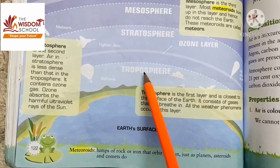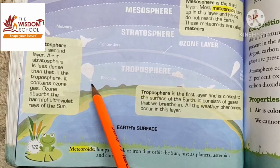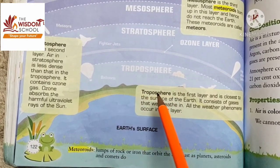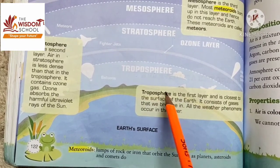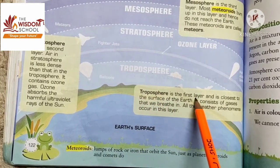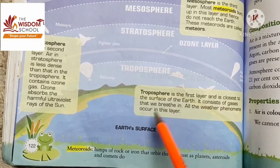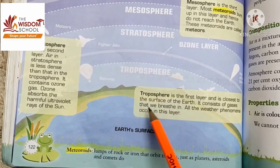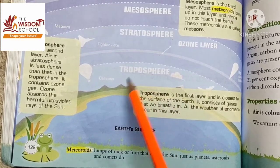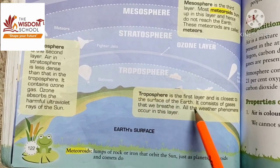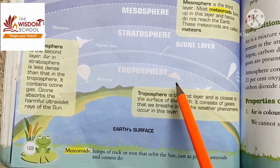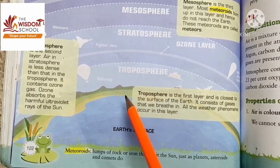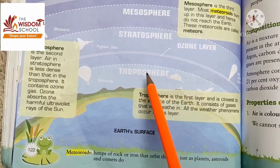Troposphere is the first layer and is closest to the surface of the earth. It consists of gases that we breathe in. All weather phenomena occur in this layer — clouds and all weather events are in the troposphere.